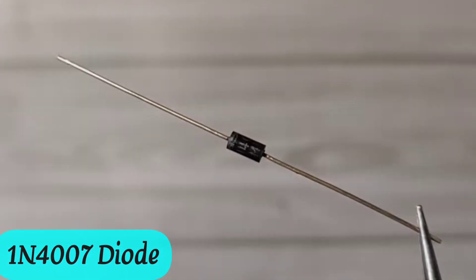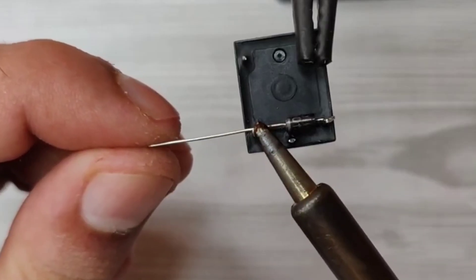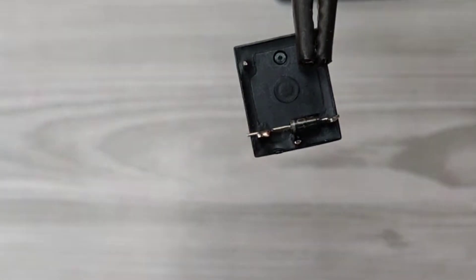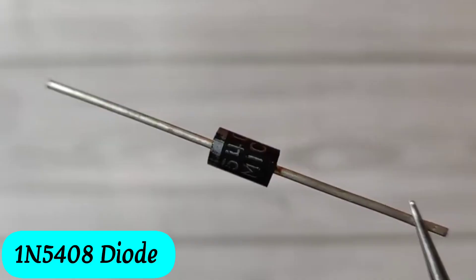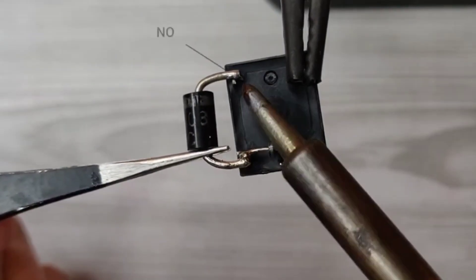Take 1N4007 diode, solder between the coil pins, cathode with coil pin to off relay. Take 1N5408 diode, solder anode with coil pin and cathode with NO pin.